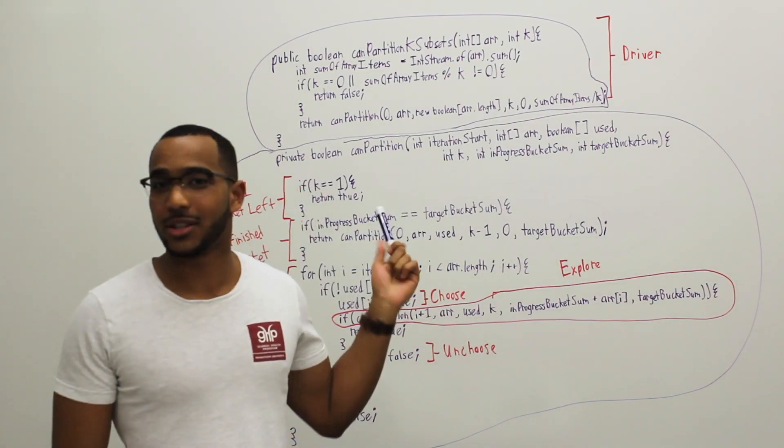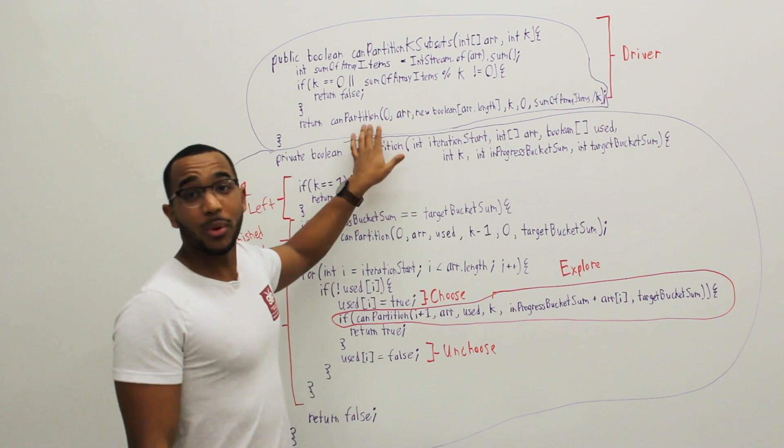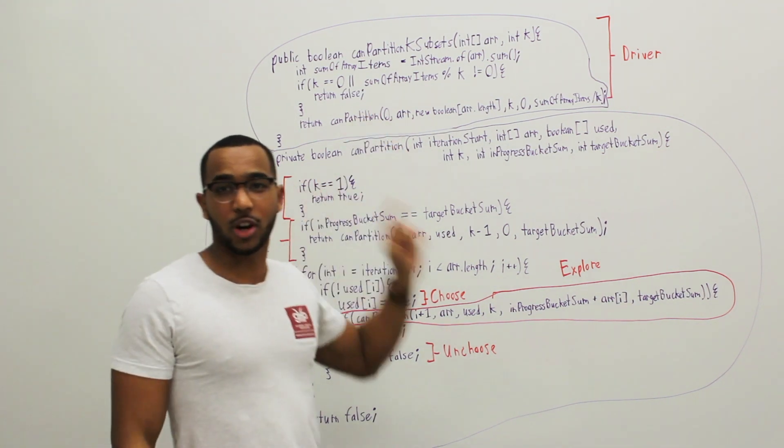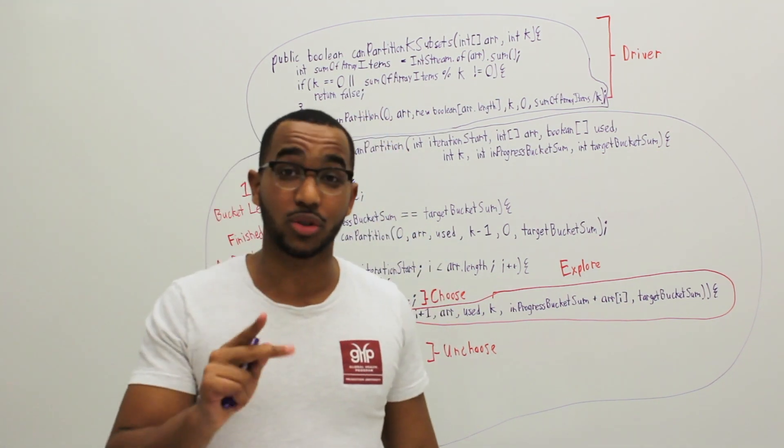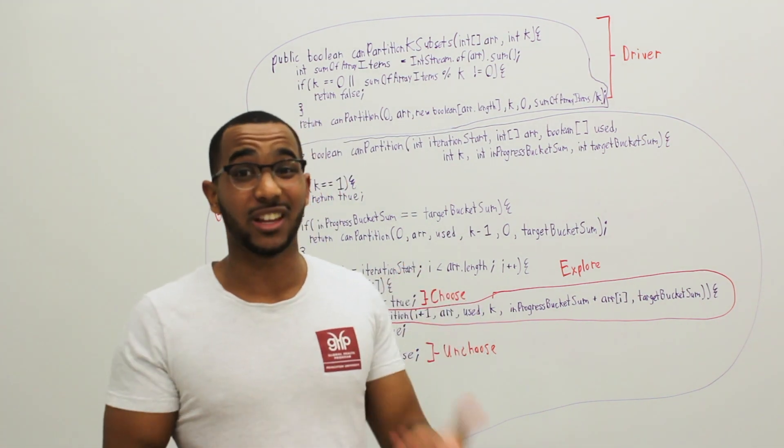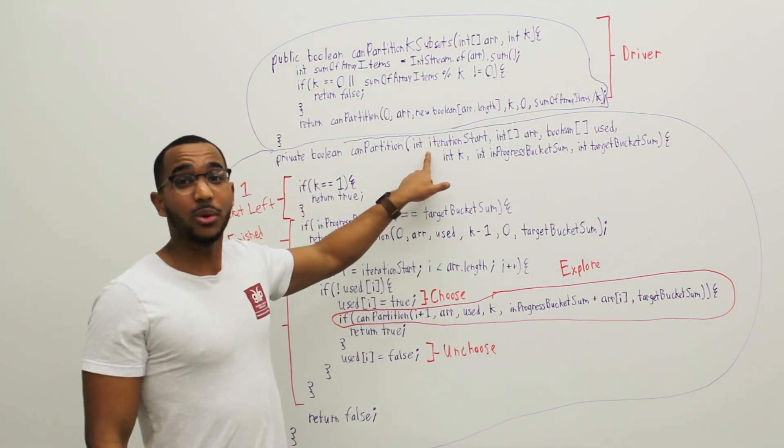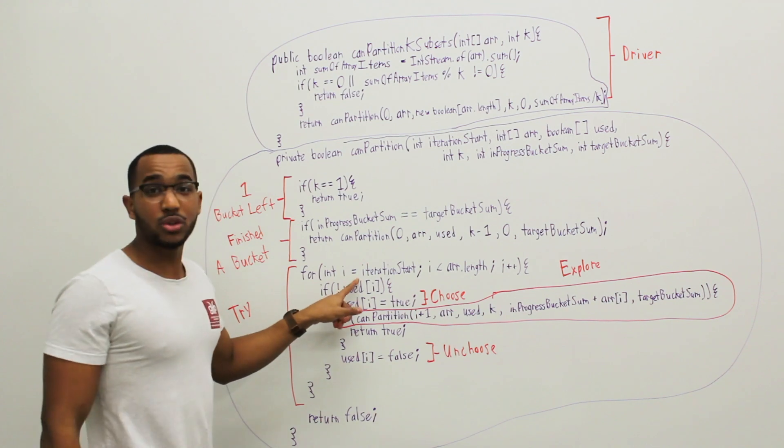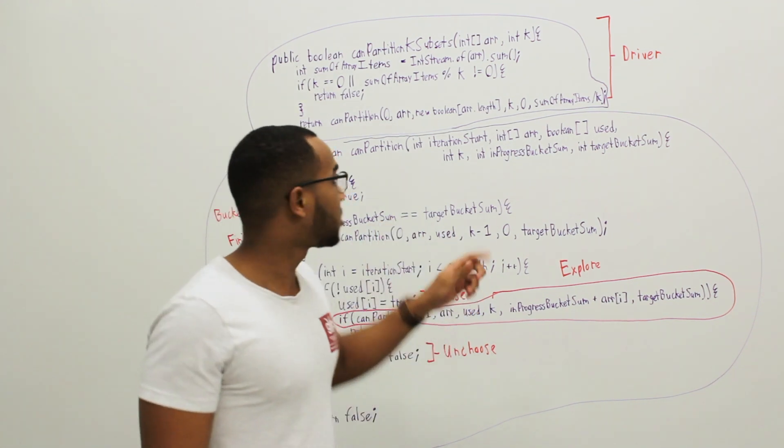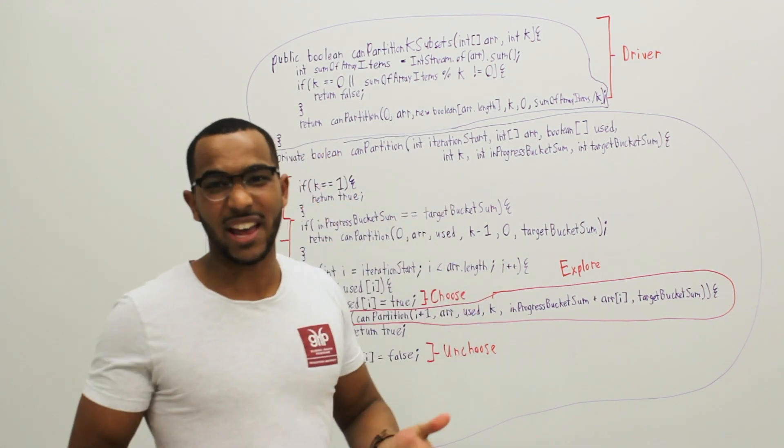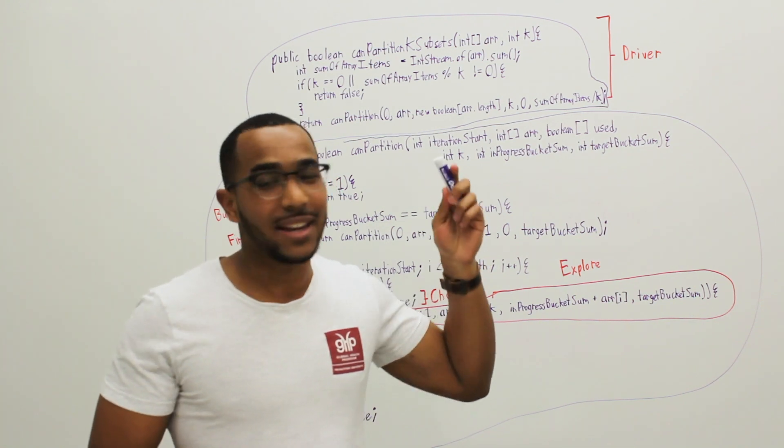I forgot to finish the function signature there. My bad. What we're going to do is we're going to kick off our recursion. Here are the key parameters to our recursion where we're going to simulate the filling of buckets. The key thing, where do we start in our iteration? We're going to start choosing items from index 0 in the array.